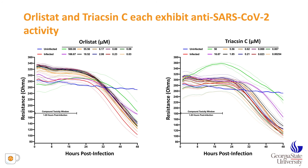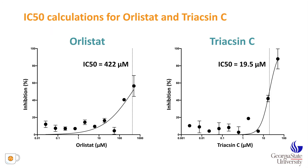We also looked at Orlistat, an FDA-approved anti-obesity drug that blocks fatty acid synthase. It showed no cytotoxicity and exhibited weak inhibition in Vero cells, with modest preservation of resistance at 500 and 166 micromolar. We also tested Triacin-C, an inhibitor of long-chain fatty acyl-CoA synthetase, which was somewhat more potent, with inhibition at 50 or 16 micromolar. Orlistat was only inhibitory at very high concentrations, while Triacin-C was more active with an IC50 of about 20 micromolar.